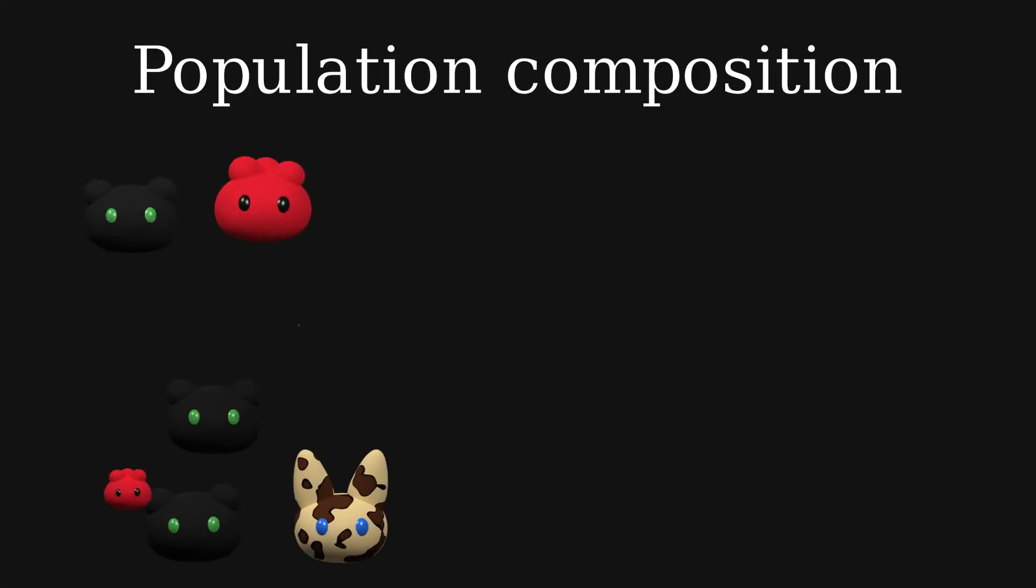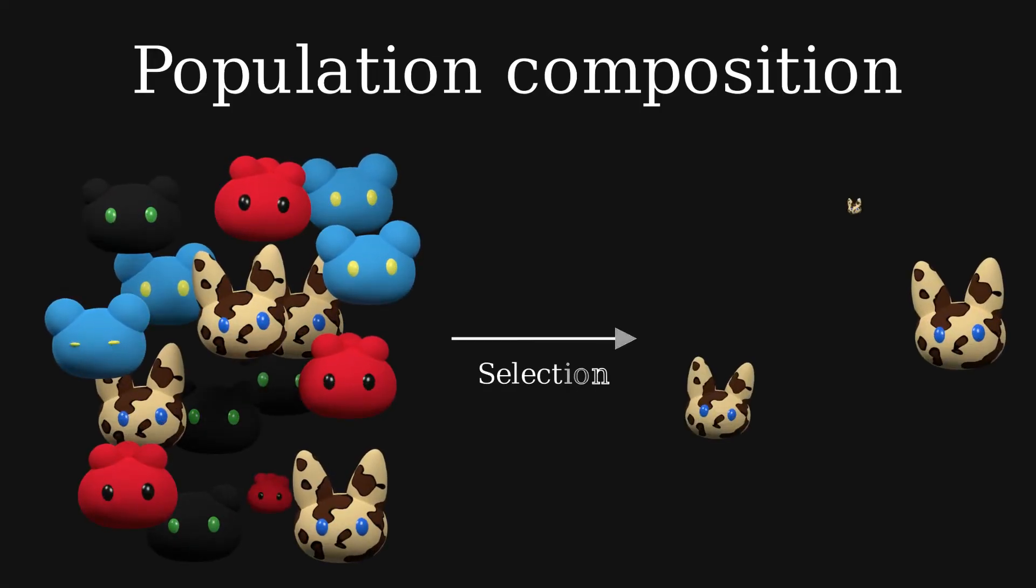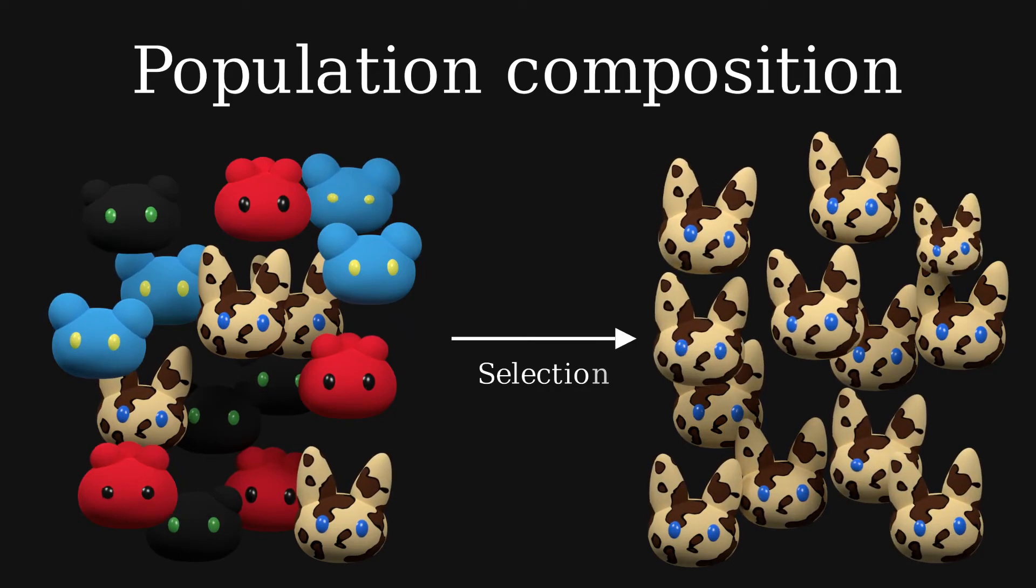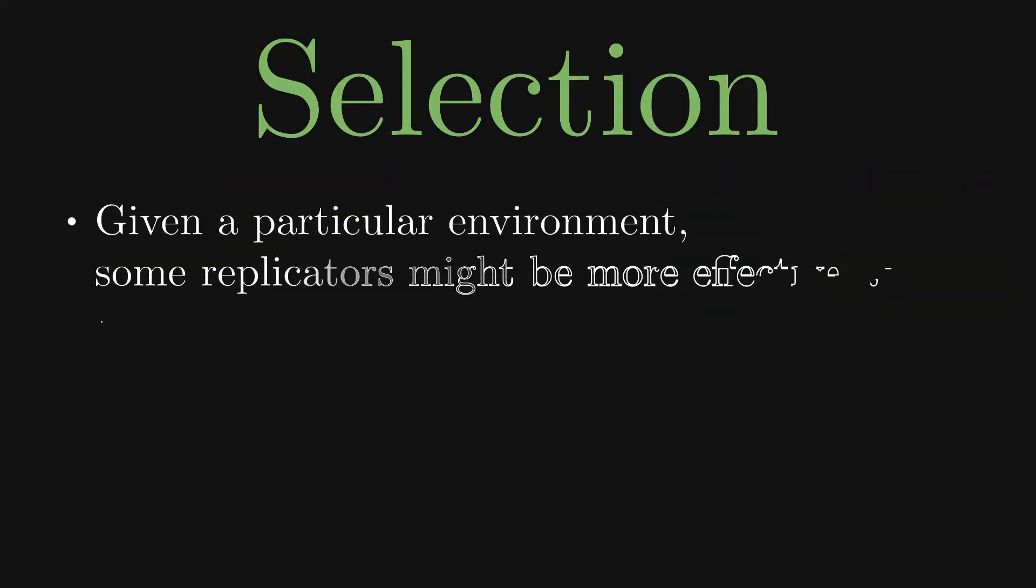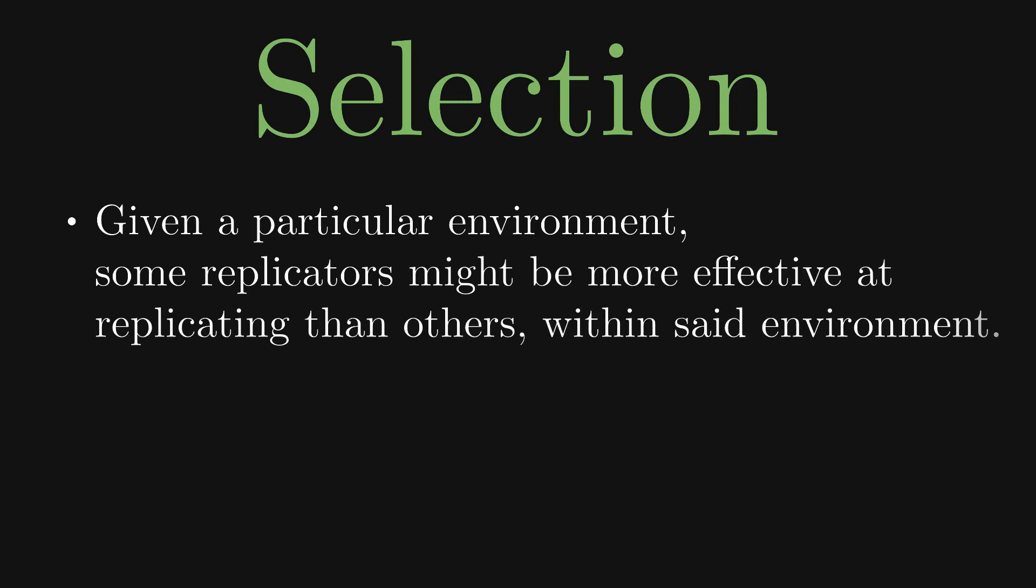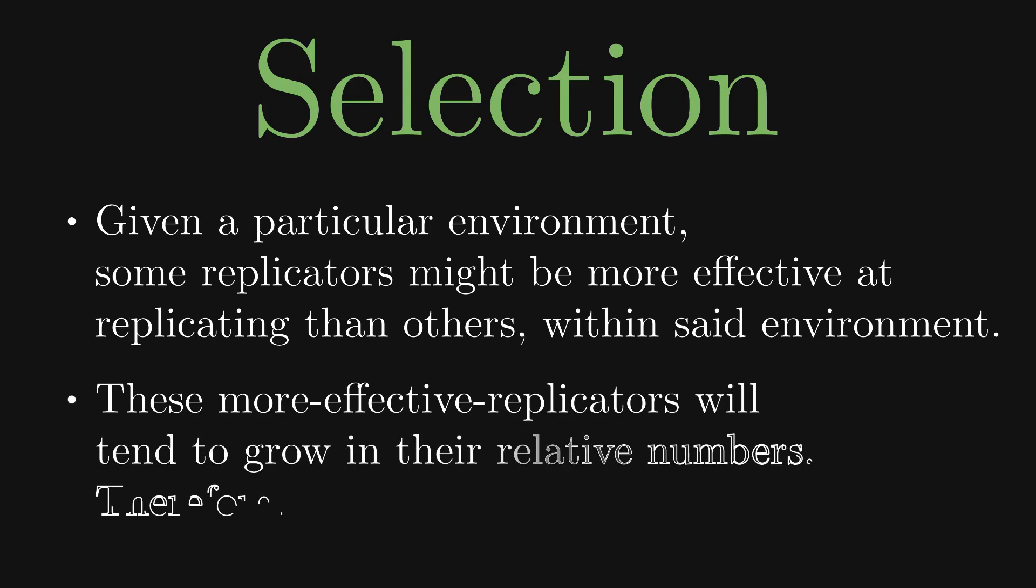What we have seen here is this little population evolved by a process of selection. Selection refers to the fact that, in a particular environment, some replicators are more effective at replicating than others. These more effective replicators will tend to grow in numbers, while the less effective ones will tend to disappear.